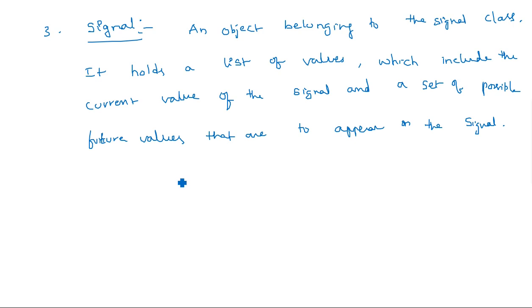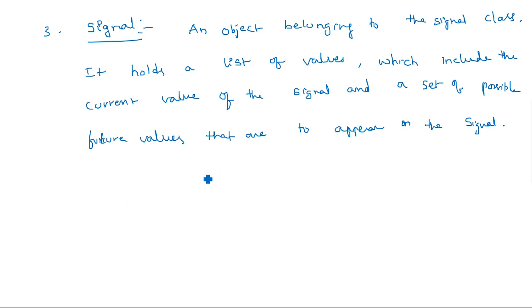Suppose I am taking S as a signal, so S may have multiple values which include the current value — meaning the present value on that signal at that time — along with the future values. Most of the times, signals are commonly preferred in intermediate communication.